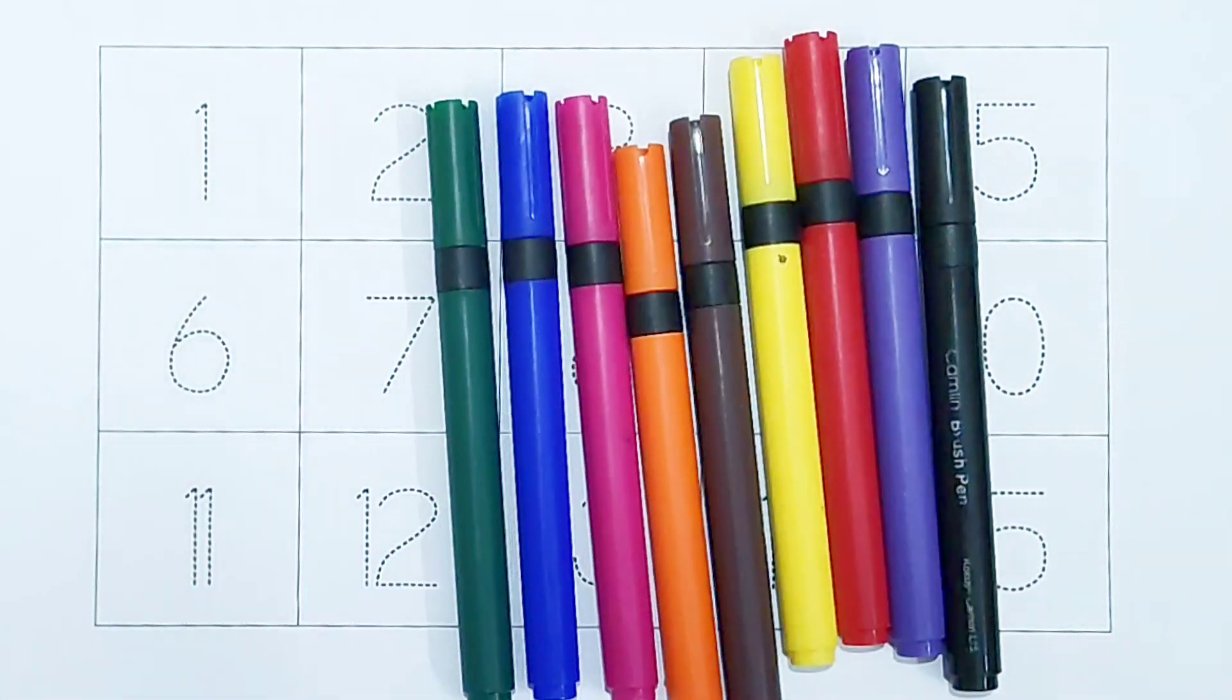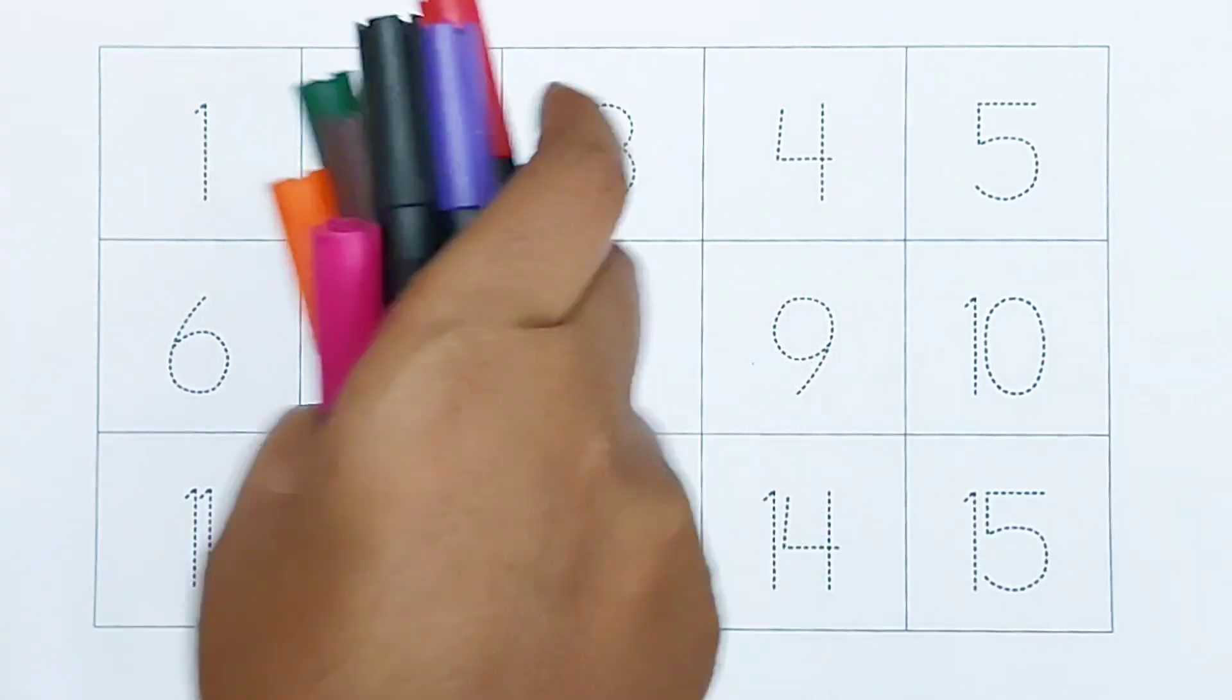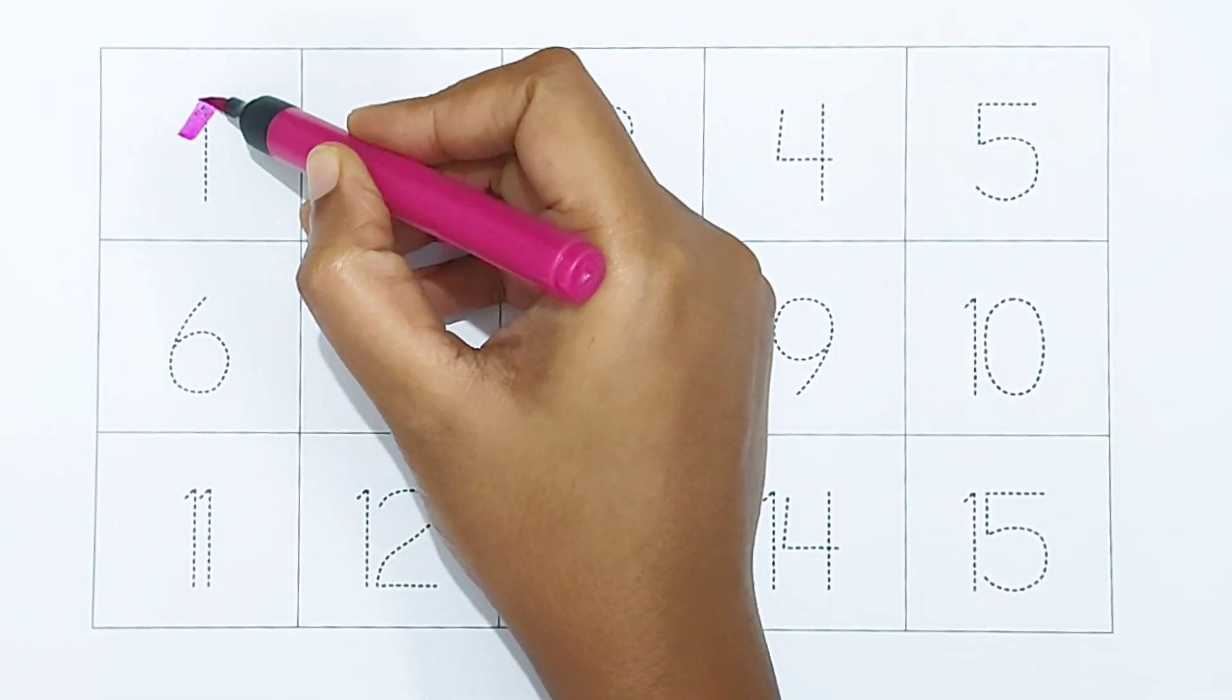Hi kids! Today we can learn the numbers from 1 to 15. Let's begin. One, dark pink color. One.